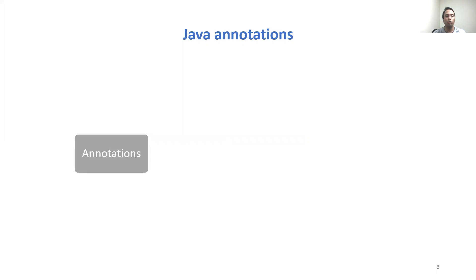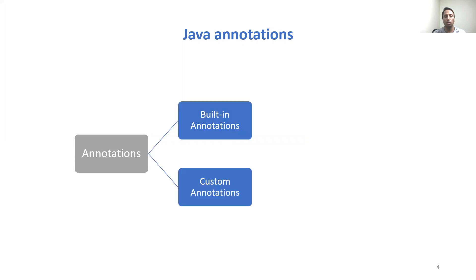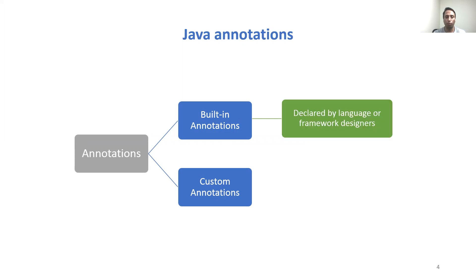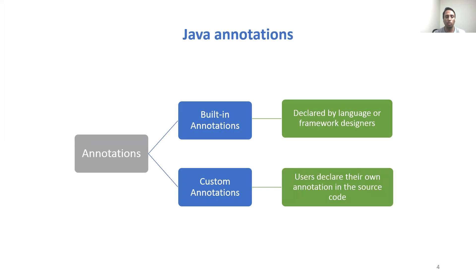Java annotations can be broadly classified into built-in annotations and custom annotations. Built-in annotations are declared by language or framework designers, whereas custom annotations are declared by users in their source code.